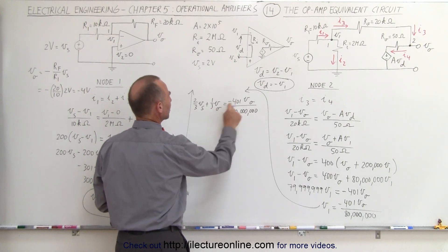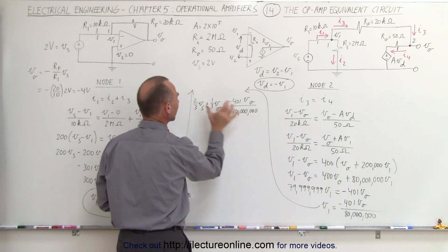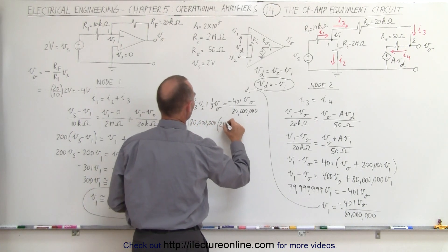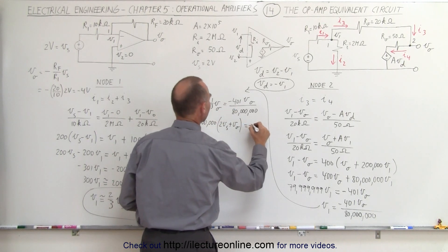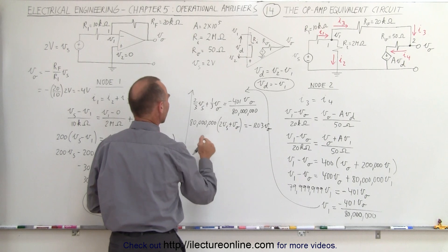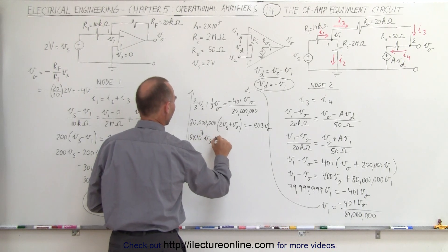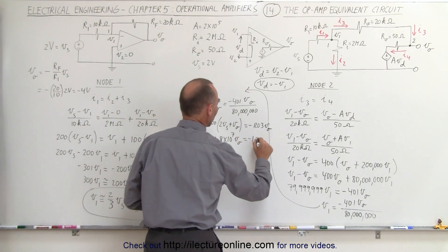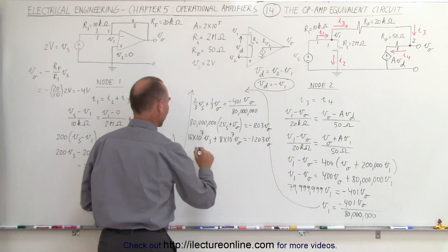Multiplying to clear fractions — moving the 3 and 80 million across — gives: 80,000,000 times (2V_S + V_O) equals 3 times (minus 1203·V_O). Expanding: 160,000,000·V_S plus 80,000,000·V_O equals minus 1203·V_O. Moving V_O terms to one side: 80,000,000·V_O plus 1203·V_O equals minus 160,000,000·V_S.